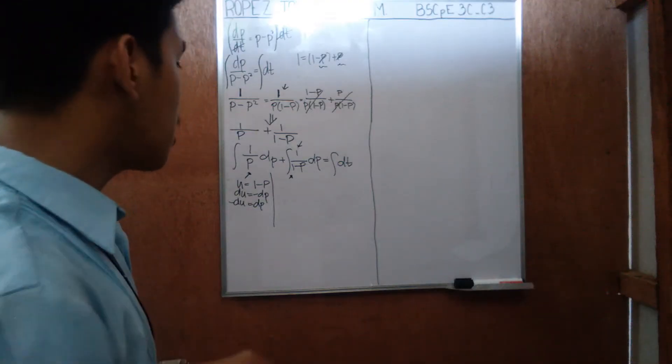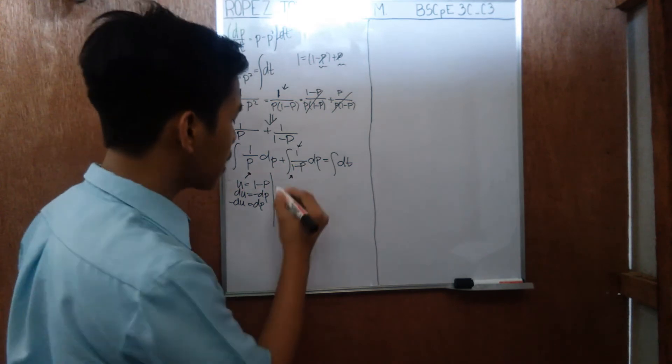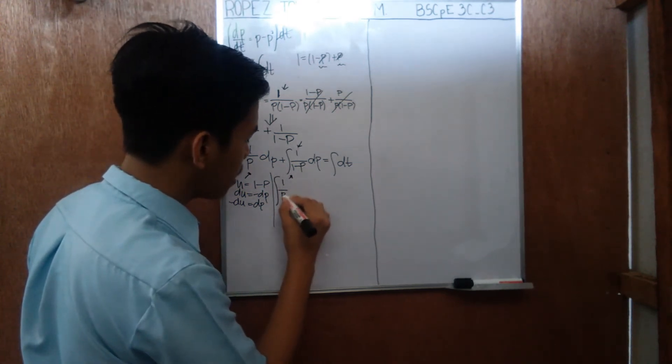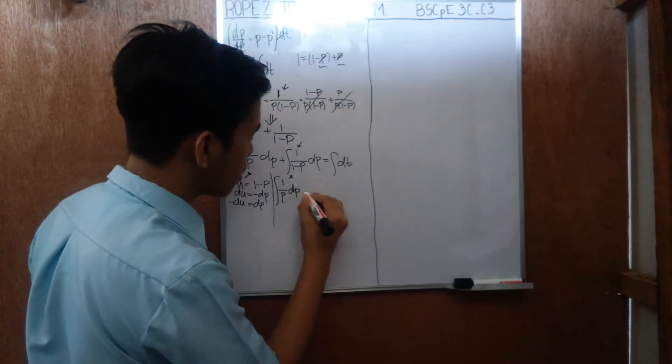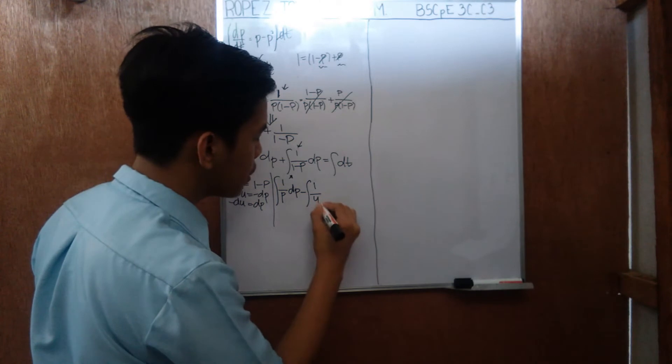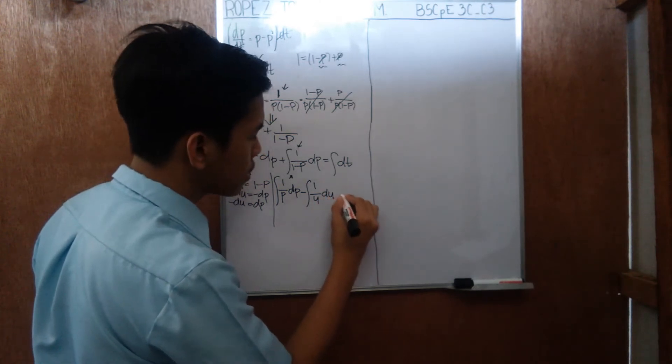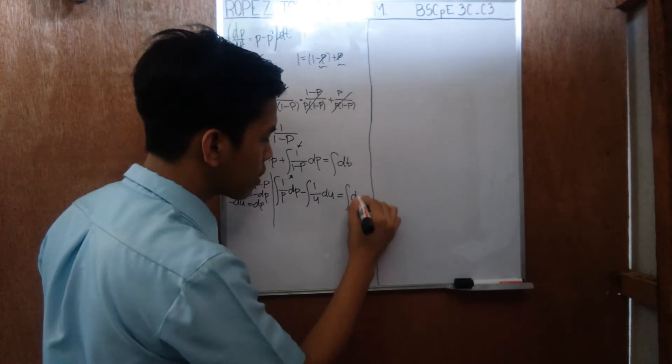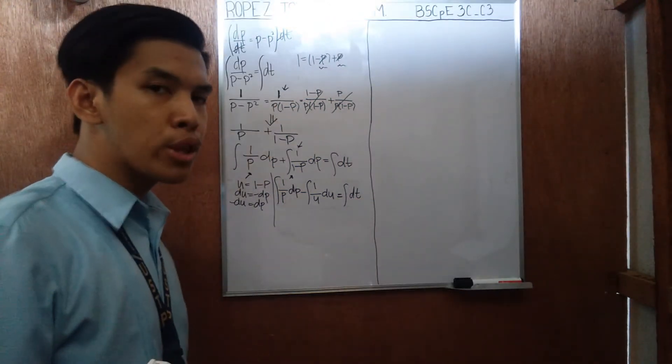And then we are getting a negative sign here. Rewriting this: integral of 1 over p dp minus integral of 1 over u du is equals to integral of dt. So now we are going to integrate this.